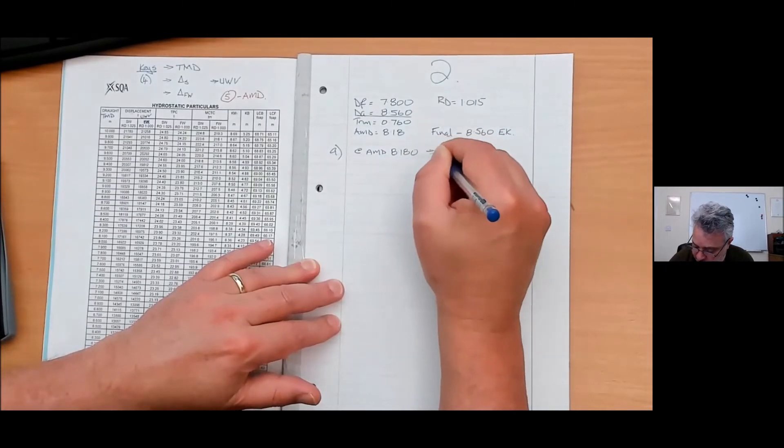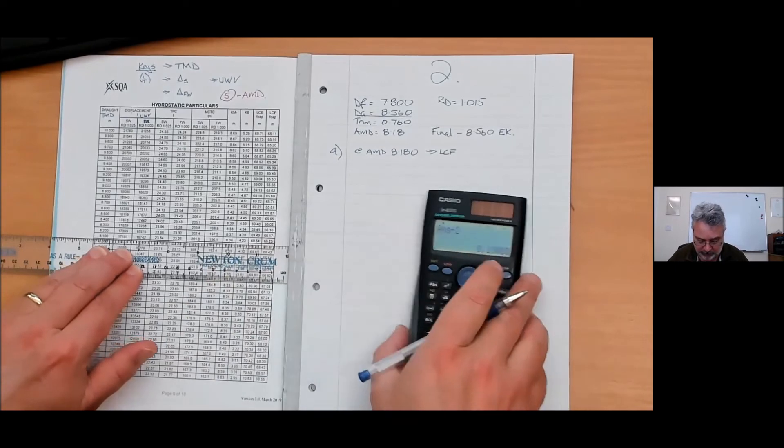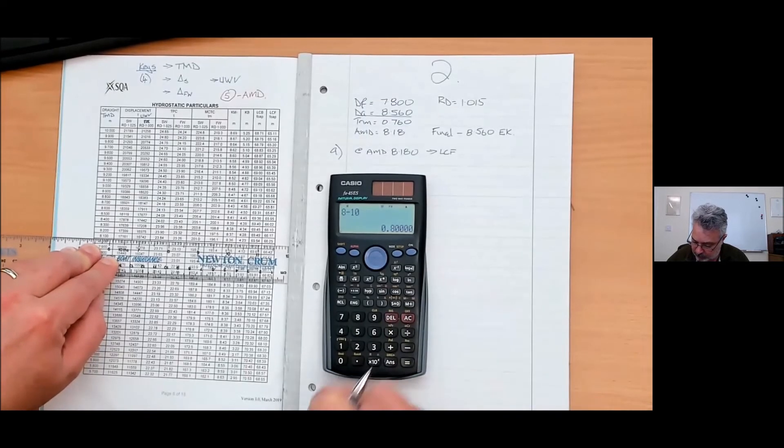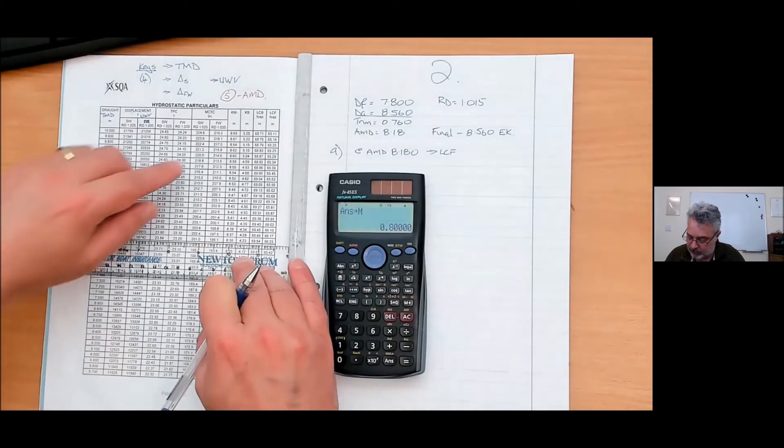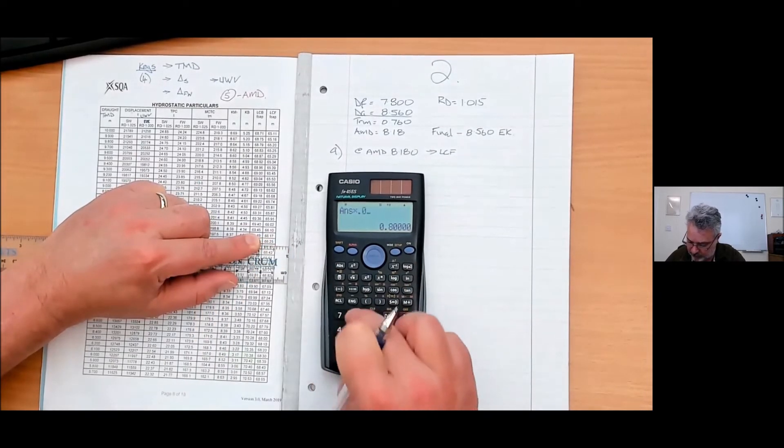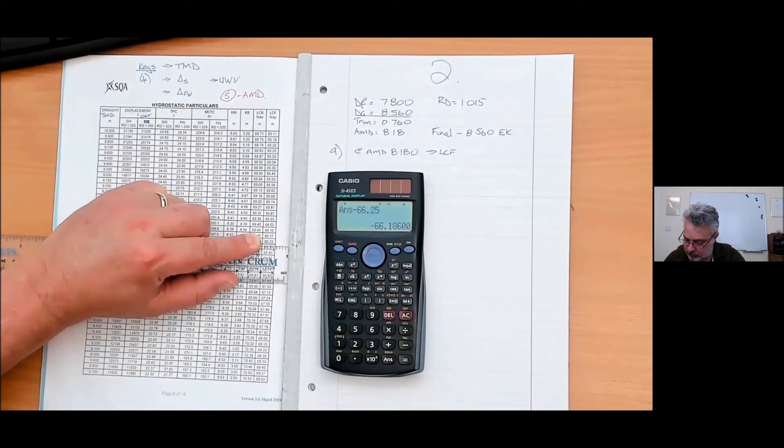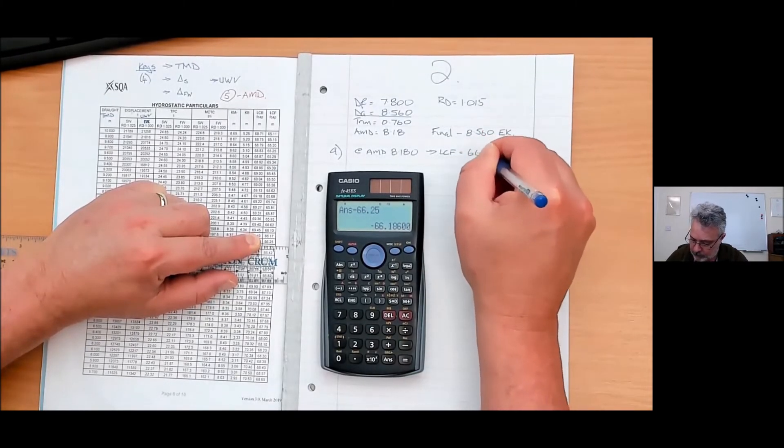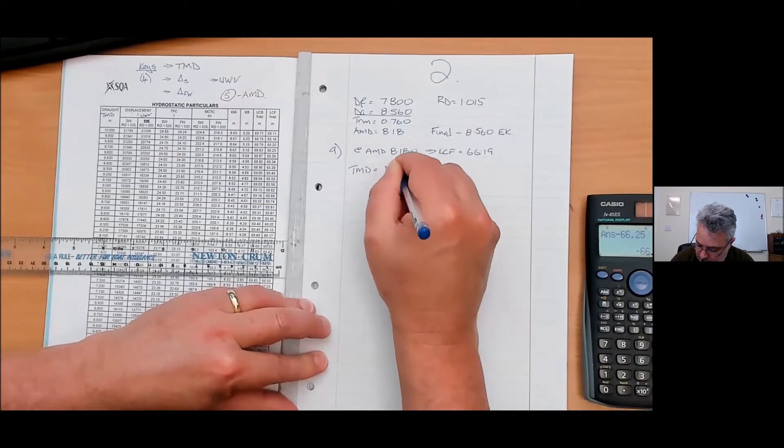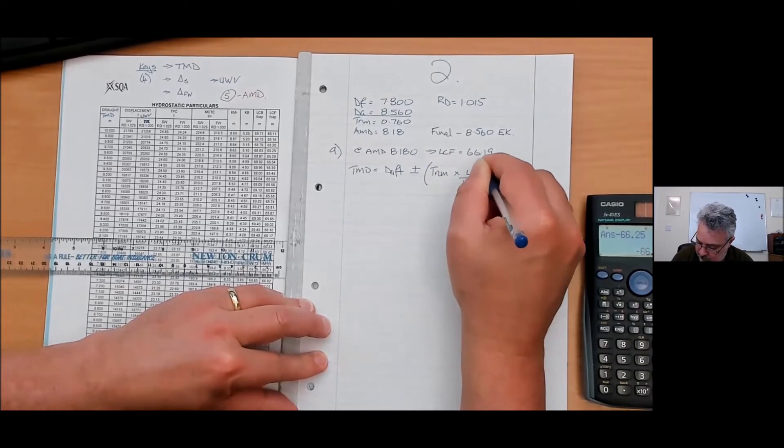We're trimmed. That means at AMD of 8.18, I need the LCF. Interpolation 8.18, 8.1 ruler. It's not just because I'm old, it's because I'm a human. That means I mess this up. So 8.18, that's eight out of 10 centimeters. I put it in the memory just so I don't hit the buttons and mess it up. I want LCF, get the right column. The gap there is 0.08.